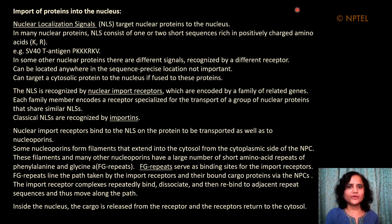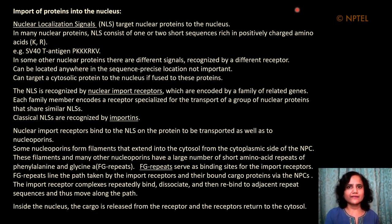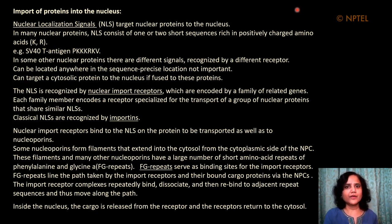In many nuclear proteins the NLS consists of one or two short sequences rich in positively charged amino acids such as lysines and arginines. For example, in the case of SV40 T-antigen — one of the first NLSs to be discovered — the sequence is quite rich in lysine and arginine: it is the short sequence PKKKRKV. In some other nuclear proteins there are different signals not following this consensus formula, and these are probably recognized by a different receptor.